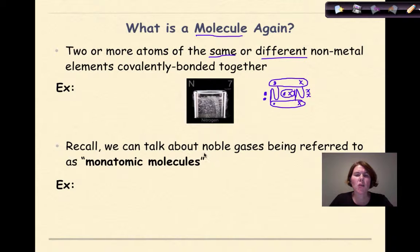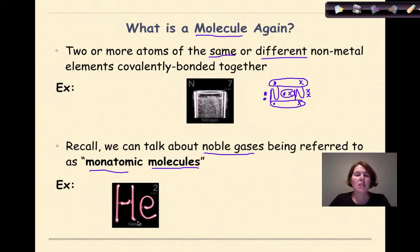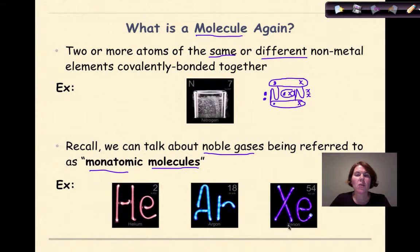We can also talk about the noble gases as being referred to as monatomic molecules where we see that mono meaning one and some examples of our noble gases are things like helium or argon or xenon.